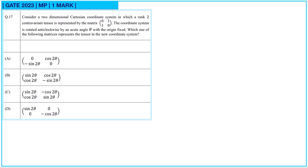Consider a two-dimensional Cartesian coordinate system in which a rank-2 contravariant tensor is represented by the matrix [[0,1],[1,0]]. The coordinate system is rotated anti-clockwise by an acute angle theta with the origin fixed. Which one of the following matrices represents the tensor in the new coordinate system?